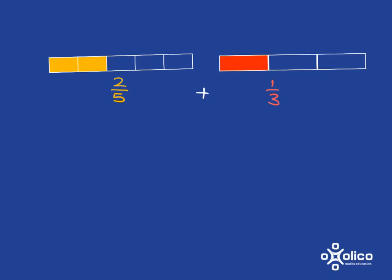Why is that? If you look here where I'm trying to add two-fifths and one-third, what I have is two-fifths are these two smaller yellow pieces here and one-third is this bigger red piece.